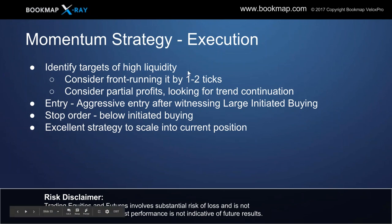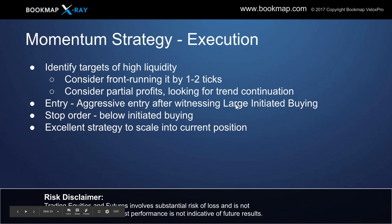Let's enhance the execution here. Previously we were looking at front-running the liquidity on the offer, identifying targets, and considering taking partial profits. But we're looking for trend continuation here. You'll most likely have to enter with an aggressive market buy order when you start to witness that large initiated buying, because you're not going to get a pullback. Your stop order goes below that initiated buying — if they're serious, they're not coming back. This is an excellent strategy for scaling into a current position: for the reversal we've already taken partial profits, and now we're adding back in with the momentum strategy.